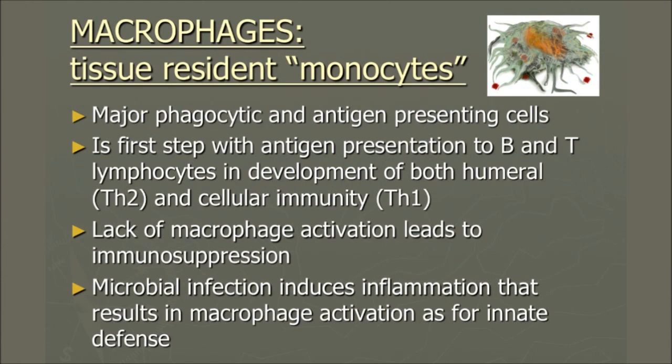We're talking about macrophages. Macrophages are the major phagocytic and antigen-presenting cells, and it is the first step with antigen presentation to B and T lymphocytes in the development of both humoral and cellular immunity. Lack of macrophage activation leads to immune suppression, and then a number of infections can evolve. Microbial infection induces inflammation that results in macrophage activation as part of innate defense.